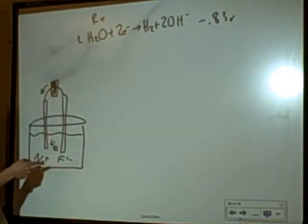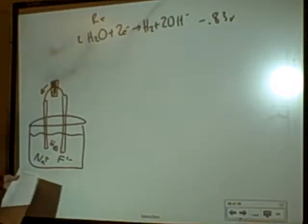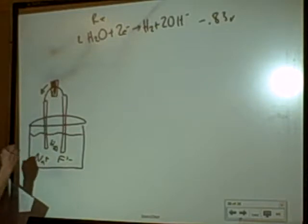Also, it's already negative. I've never heard of F2 minus. It's a whole new shell. You're adding an electron to it. That doesn't happen.